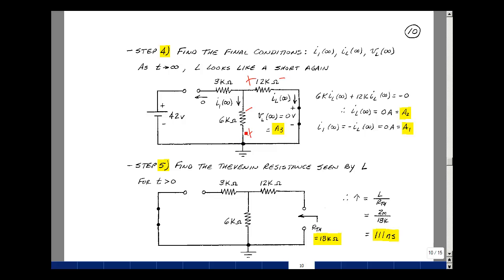So that'd be 6k times I sub L at infinity plus 12k times I sub L at infinity plus 0 equals 0. But since I have something times I sub L and something times I sub L, and that has to equal 0, then I sub L must be equal to 0.